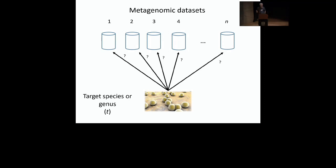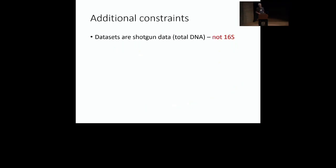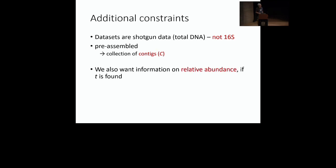This is basically a needle-in-a-haystack problem, very familiar to bioinformaticians, but there are some additional constraints. The first is that the datasets I am assuming are all shotgun data, or total DNA — not 16S. I also assume they are pre-assembled, which means that the input for the problem is actually a collection of contigs. We also want not only information about presence or absence, but also information on relative abundance of T wherever T is found.